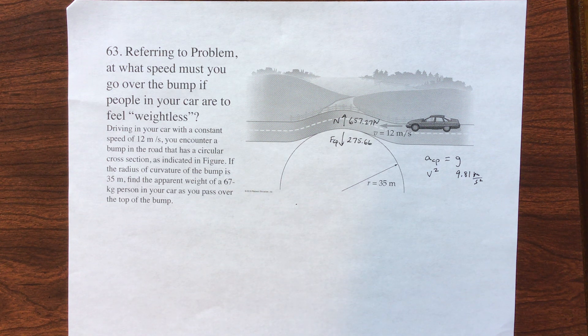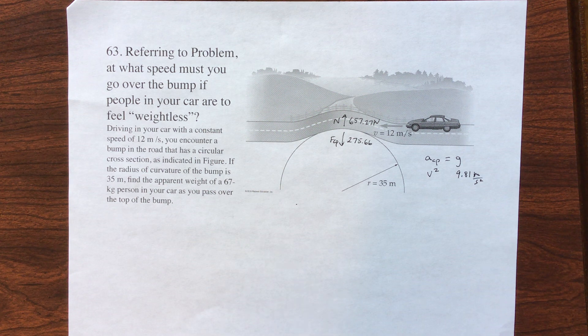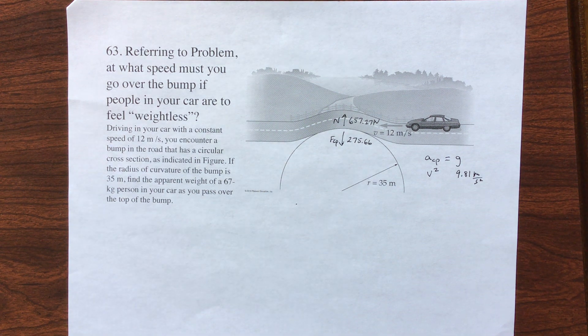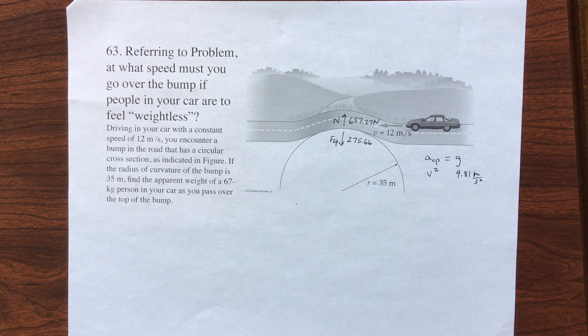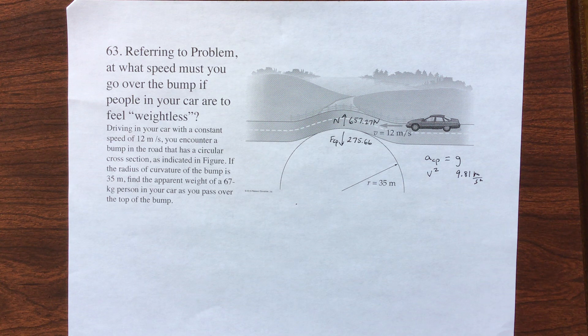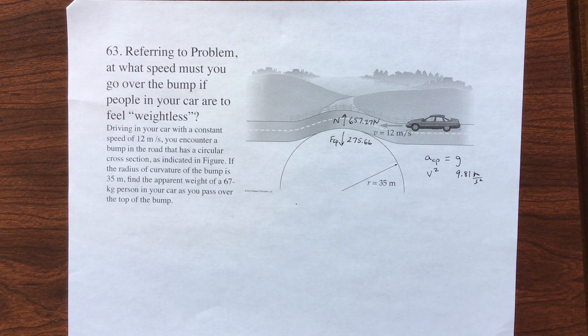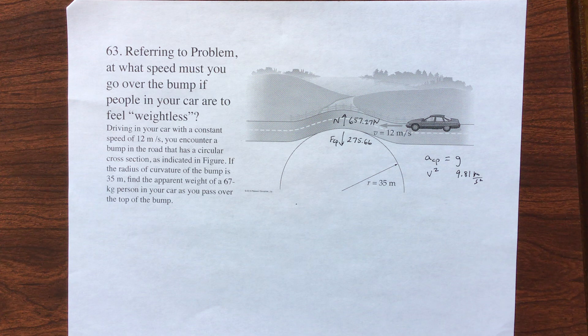Referring to the previous problem, which is in the small print here, you're driving a car, you go over a hump, and they want to know your apparent weight. What's happening is, since you're going in a circle, you have the car seat pushing up on you. That's your apparent weight, so that's your normal force. Then you have the centripetal force pulling down because you're in a circle, and that will counter, so you feel less heavy than you would.